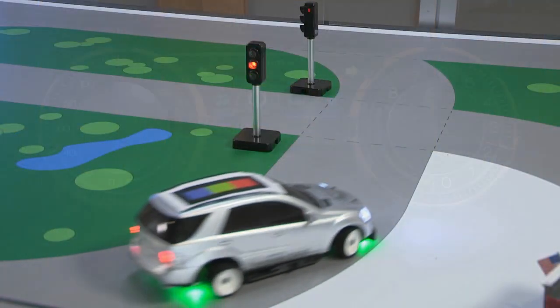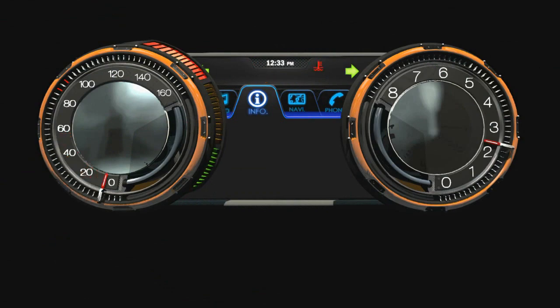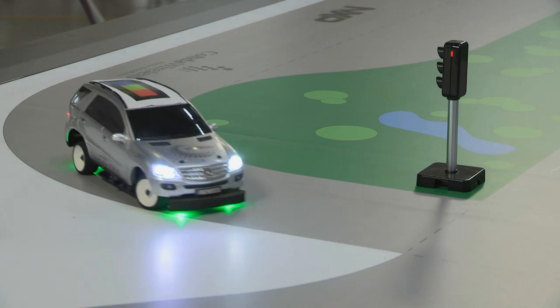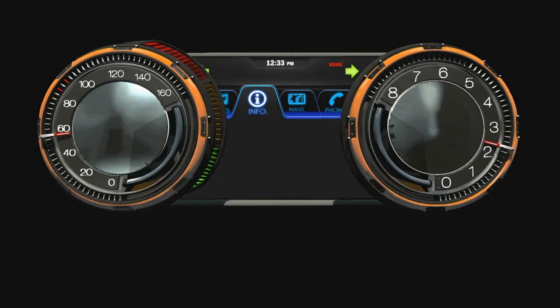As we approach the intersection, you'll see that the indication on the instrument cluster only appears as you near the traffic light. Once we pass through the light, the indicator goes away.